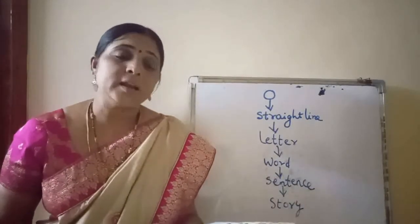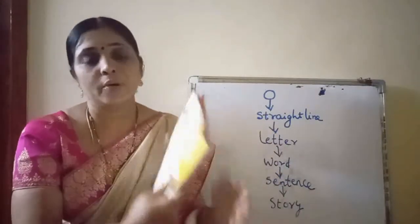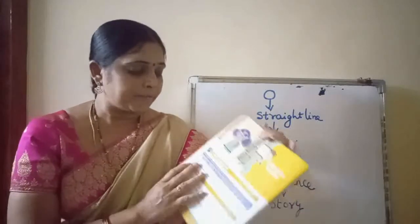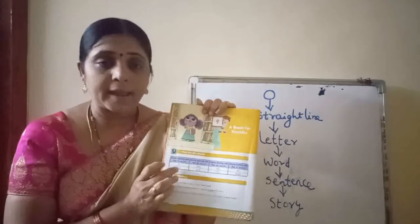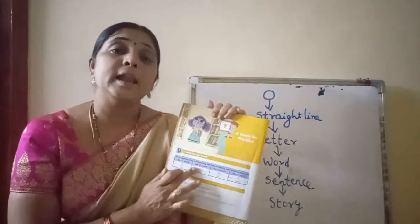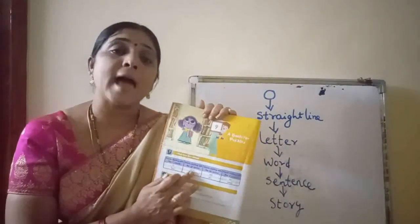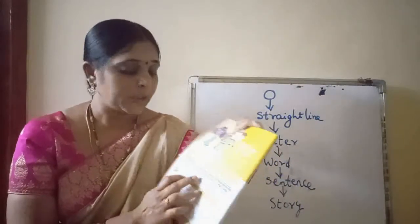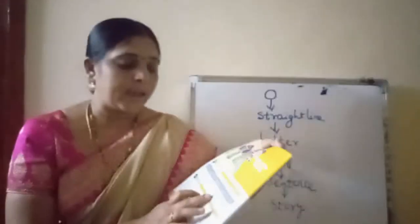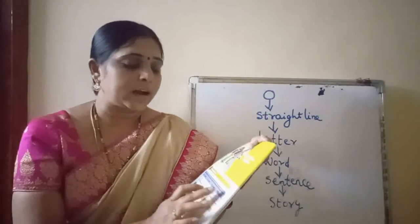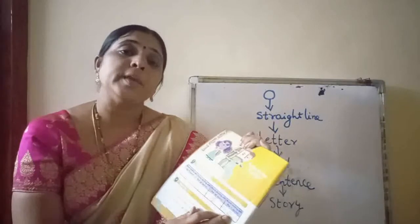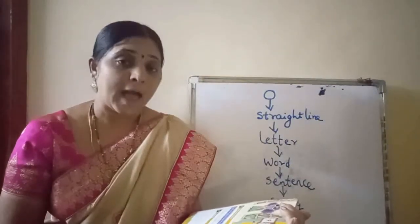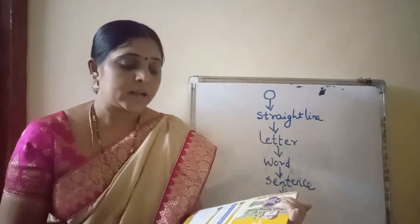All of you got it? Once again, repeat along with me. Keep your fingers in your book and read along. FL words: F-L-Y, fly. F-L-A-G, flag. GL words: G-L-A-S-S, glass. G-L-U-E, glue. SK words: S-K-I-P, skip. S-K-I-N, skin. SL words: S-L-I-P, slip. S-L-E-E-P, sleep. Fly, flag, glass, glue, skip, skin, slip, sleep.